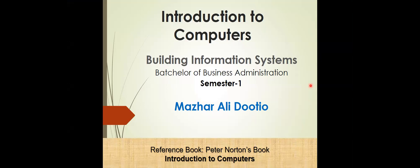Dear students, we discussed in the previous lecture what information is, what the components of information systems are, and what components or systems are required to run an information system. In today's lecture I will discuss the process of making the information system, because you are students of business administration. When you work as a manager you must know the development of information systems. I will first give you one or two definitions before we move to the development process.